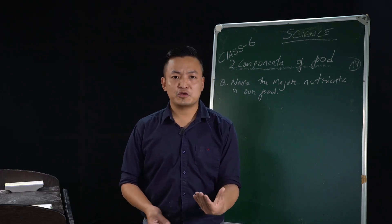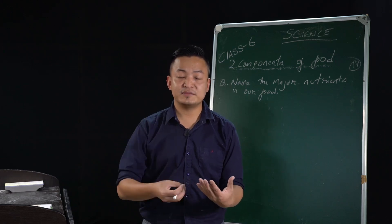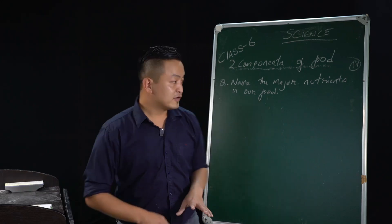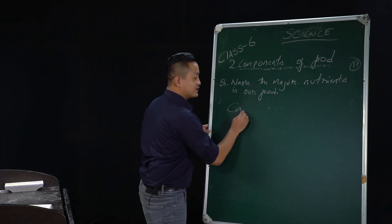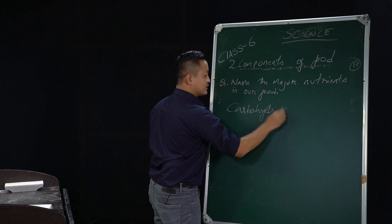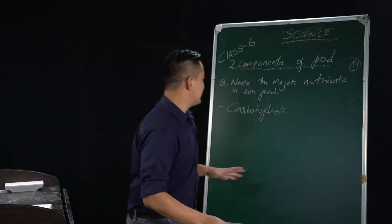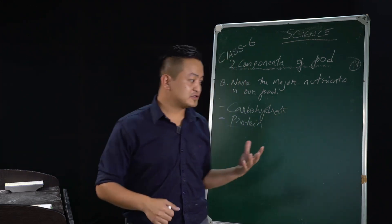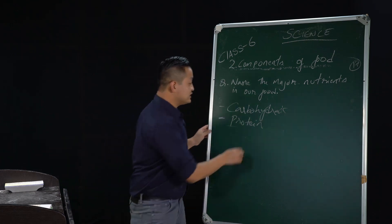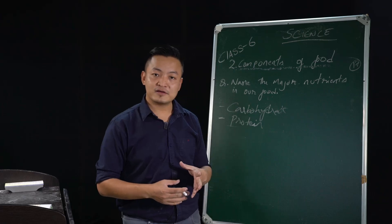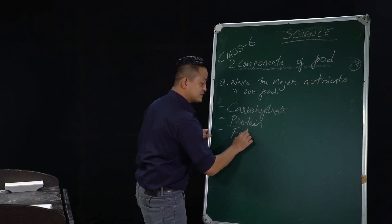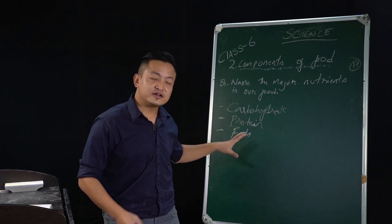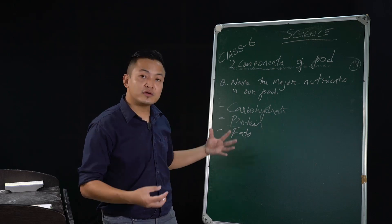For example, in an egg we cannot expect proteins, fats, vitamins, minerals, and carbohydrates all at once. So all varieties of food have different nutrients. The first nutrient is carbohydrates — this is an energy-giving food. The second one is protein — this is a body-building food. Because of protein, your muscles and body get repaired.